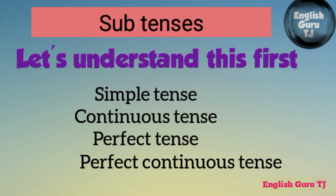Now I am going to talk about sub-tenses. The sub-tenses are: simple tense, continuous tense, perfect tense, and perfect continuous tense. Simple tense means 'saadha kaal', continuous tense means 'saalu kaal', perfect tense means 'poorna kaal', and perfect continuous tense means 'saalu poorna kaal'.